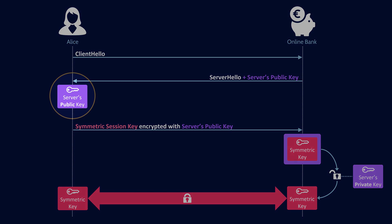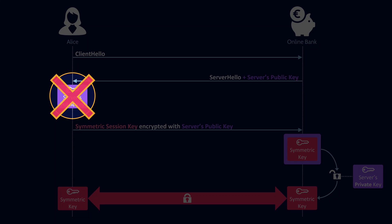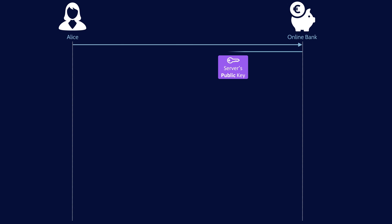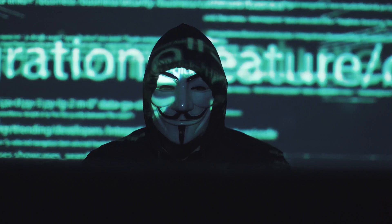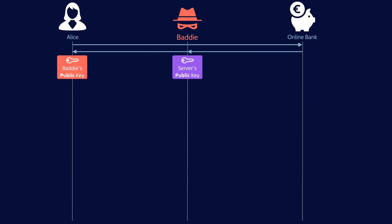This seems great, but there's actually a huge problem — it has to do with the server sending its public key to Alice. Public keys are never sent like this; this is not how protocols like TLS actually work. To understand why, let's introduce a third actor: the baddie, performing a man-in-the-middle attack. The baddie intercepts the server's public key and, rather than forwarding the server's public key to Alice, forwards the baddie's own public key instead.